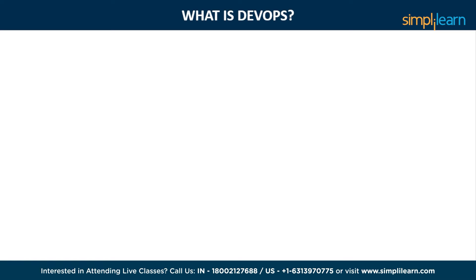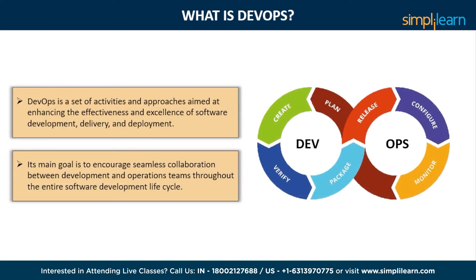Let's first understand what DevOps is. DevOps is a set of activities and approaches aimed at enhancing the effectiveness and excellence of software development, delivery, and deployment. It brings together the realms of software development and information technology operations. The main goal of DevOps is to encourage seamless collaboration between development and operations teams through the entire software development lifecycle. It achieves this through the utilization of automation, continuous integration, delivery, and deployment, thereby accelerating the process and minimizing errors in software development.